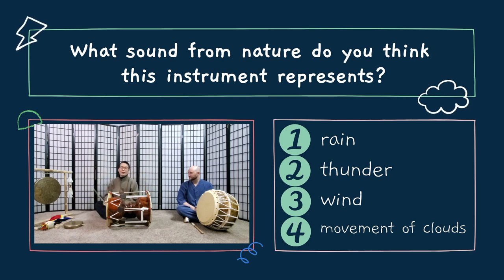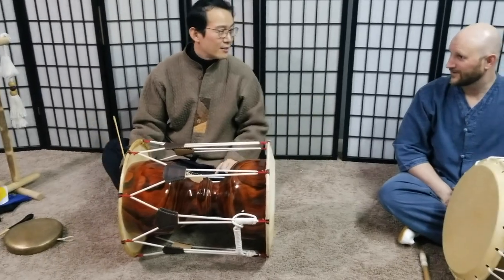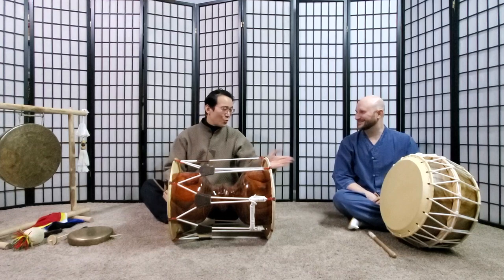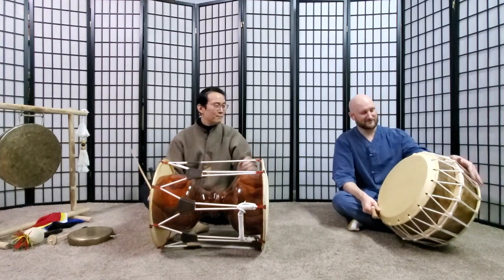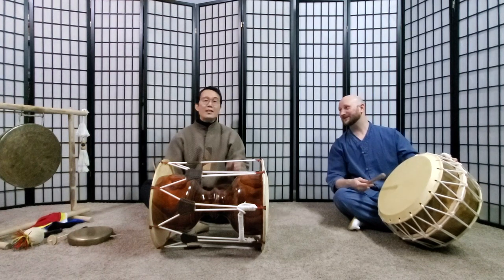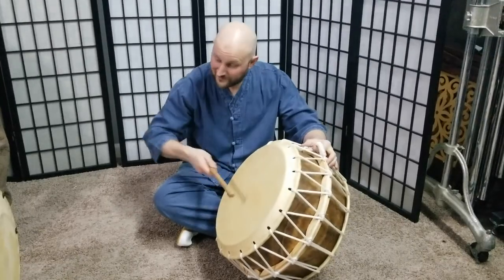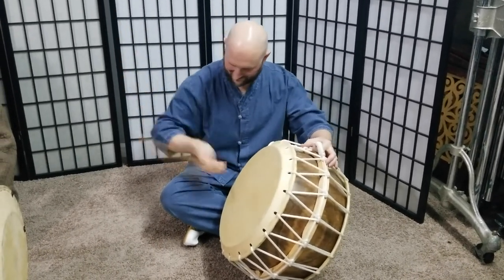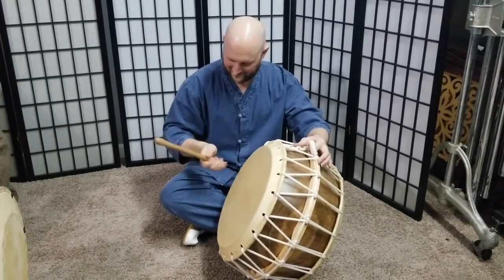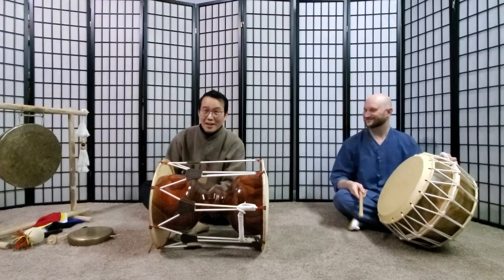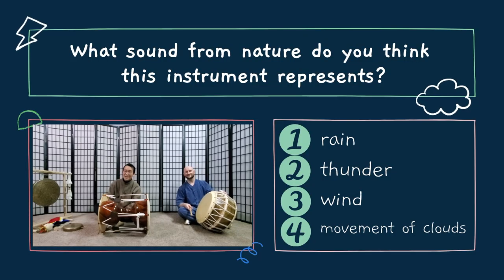For the janggu: number one, rain; number two, thunder; number three, wind; number four, the movement of cloud. Fifty-fifty chance — rain! You are correct! Do you want to play? Sure! We already know which one this is by process of elimination — let's ask the audience. Nice job, Brent!